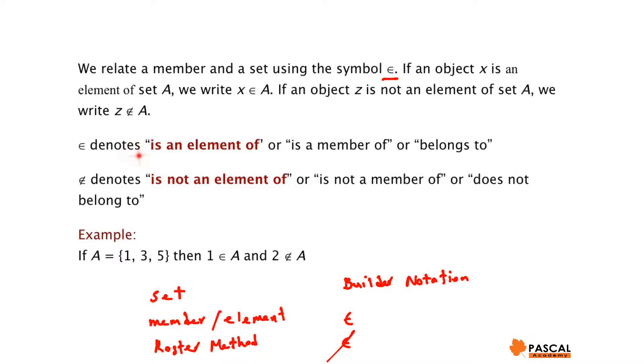And the second notation has the opposite meaning. Z does not belong to A, or Z is not an element of A. For example, if A is 1, 3, 5, then 1 belongs to A, and 2 does not belong to A.